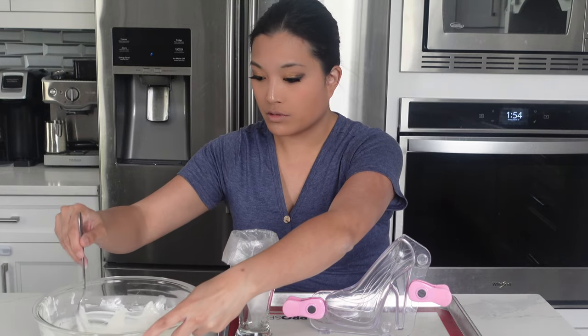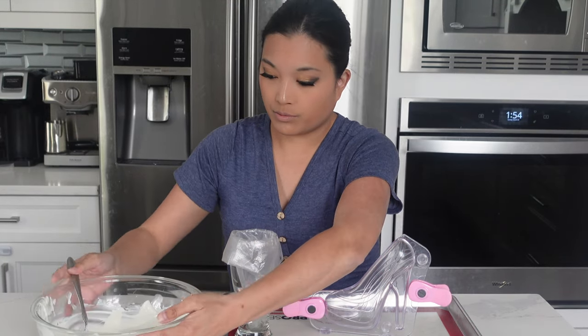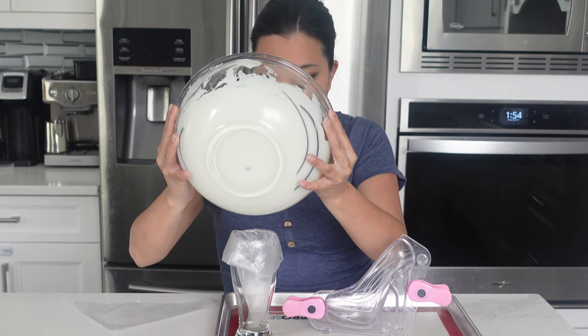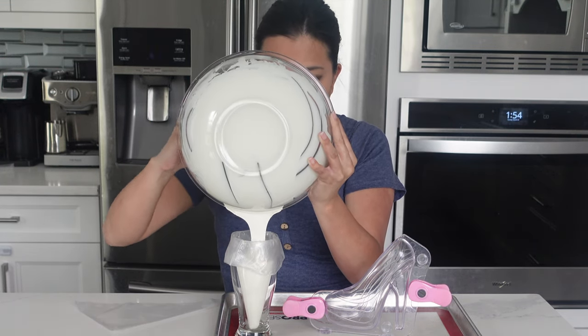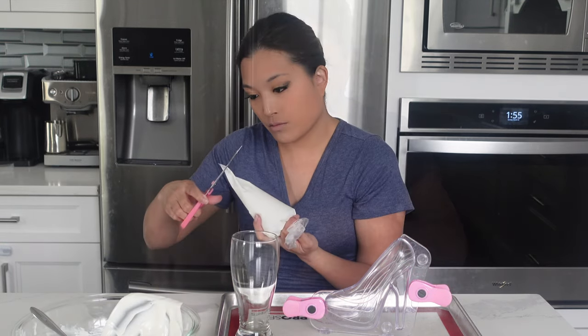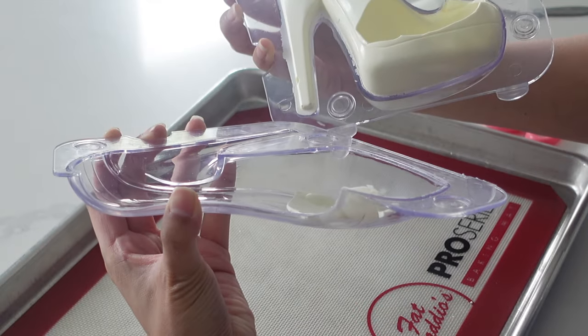So you'll notice what I'm doing here is I'm taking a version of Candy Melts. These are a little bit different than the Wilton brand that I've normally used, but you can use white chocolate as well, or you can use milk chocolate. Keep in mind though, if you aren't using a Candy Melts version, you will have to temper the chocolate. So the reason that I'm using this today is because I really don't have to do anything.